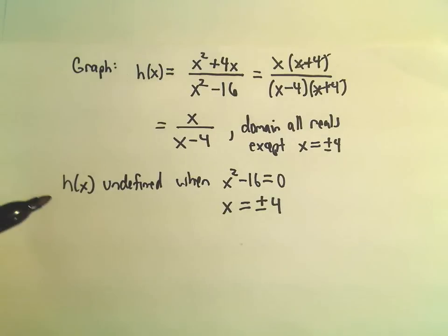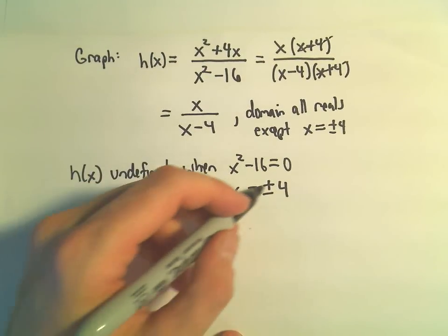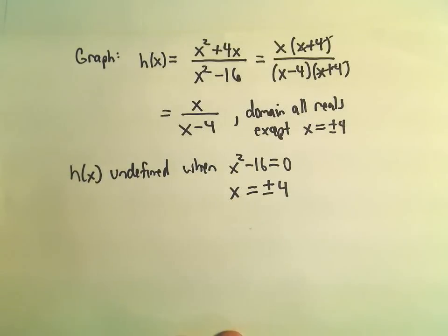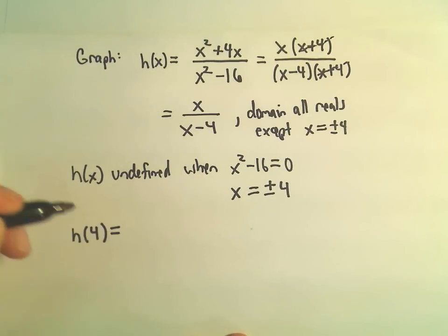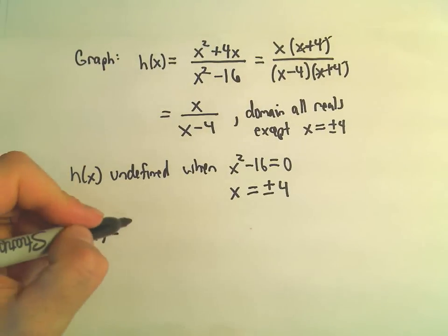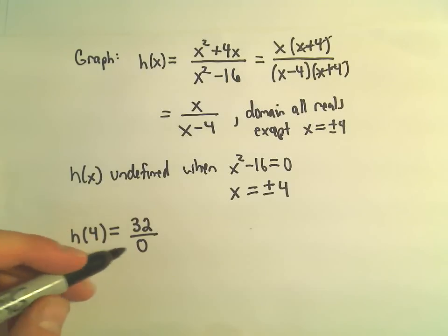And I'm going to make a little realization here as to whether at x equals positive 4 or negative 4 am I getting vertical asymptotes or am I getting holes in the graph? So notice if we plug 4 into the original function, we would get 4 squared, which is 16, plus 4 times 4, which is another 16. We would get 32 over 0. So something non-zero over zero, that tells me there's a vertical asymptote.